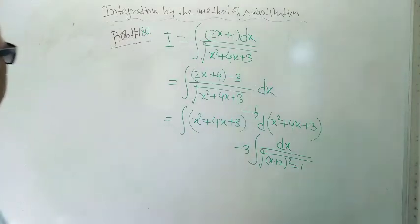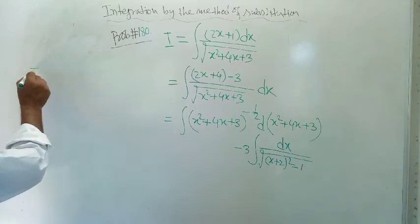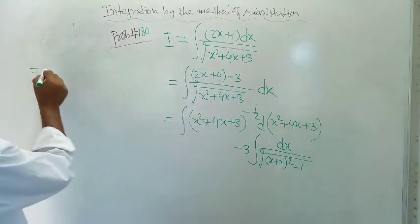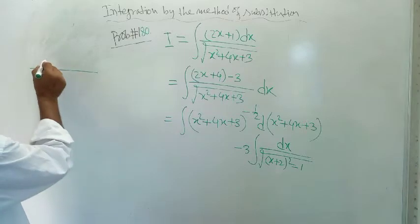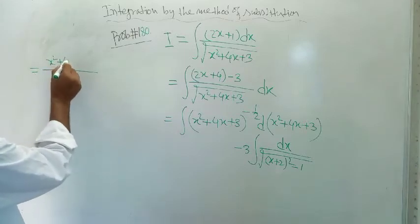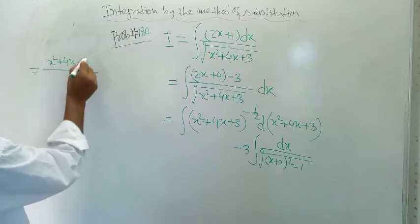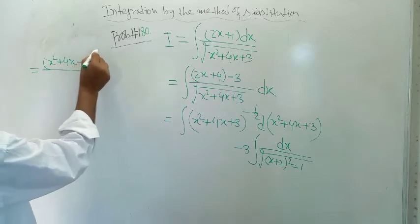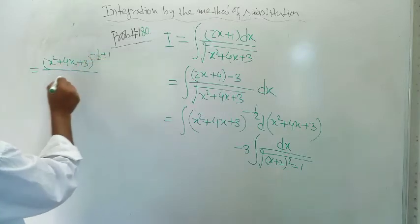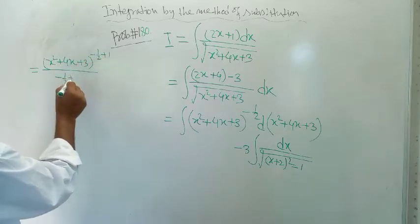The next step I am going to write here. This is x square plus 4x plus 3 whole to the power minus half plus 1 in the denominator, minus half plus 1.